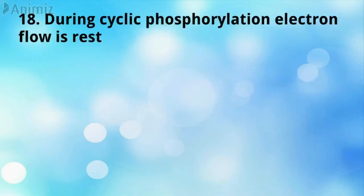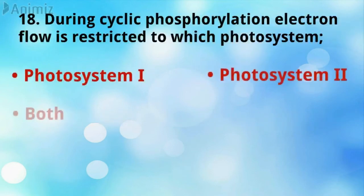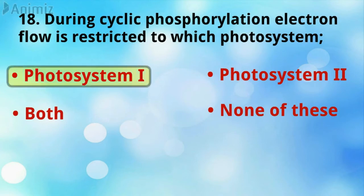During cyclic phosphorylation, electron flow is restricted to which photosystem? Photosystem I is the correct answer.